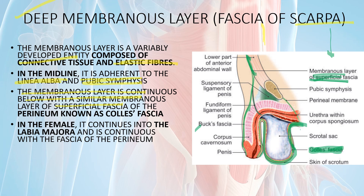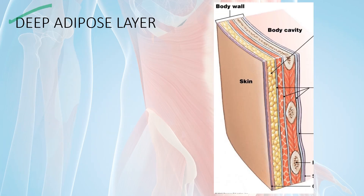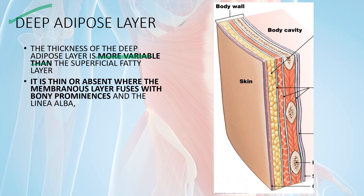In the female, Scarpa's fascia merges into the labia majora. In the male, it forms the fundiform ligament and the suspensory ligament of the penis. In the female, this is known as the fundiform ligament or suspensory ligament of the clitoris. The deep adipose layer is deeper to the membranous layer and has variable adipose tissue.